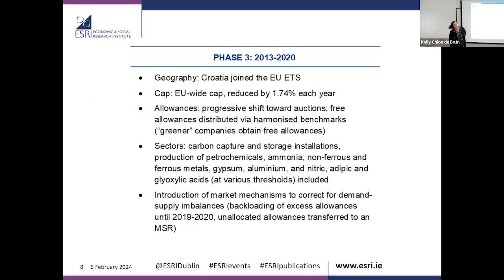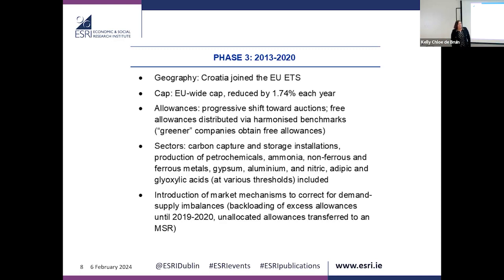Phase three ran from 2013 to 2020. Croatia joined, and finally they introduced a cap, deciding to reduce emissions by about 1.7% per year. Allowances originally given for free were gradually reduced and auctioned off. Other sectors were also brought in — not just highly polluting ones, but large companies like Amazon and Google in Ireland. They also introduced the Market Stability Reserve (MSR) to control allowance supply.